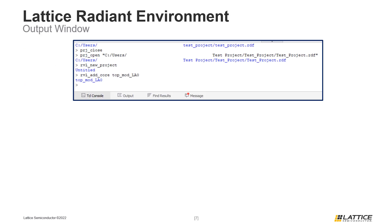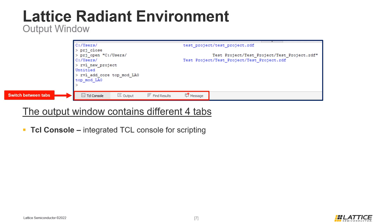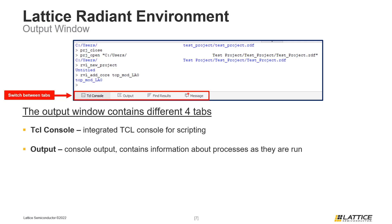The last thing we are going to discuss in this section is Radiant's output window. The output window is located in the bottom right part of the Lattice Radiant workspace and contains four tabs, which can be switched between by selecting the tab name. The default tab is the Tcl Console — this is essentially an integrated console for Tcl scripting where users can execute their own Tcl commands or scripts. Automated Tcl commands used by Radiant are also displayed here. The second tab, called Output, is Radiant's console output and contains information about the various processes that occur while Radiant is being used.